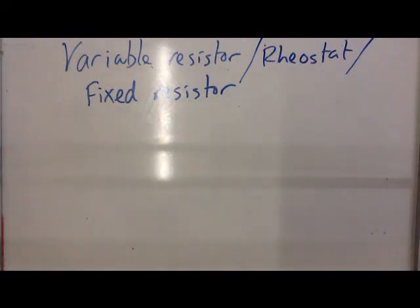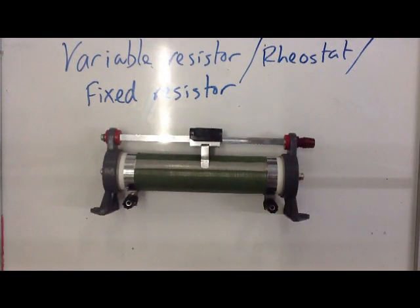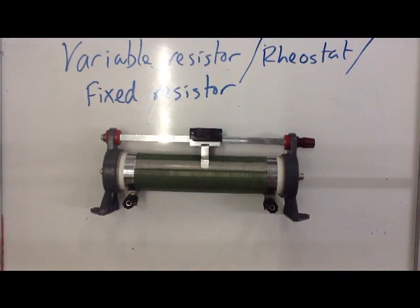Quick video about the variable resistor, this piece of equipment here, which is also known as a rheostat. It can also be known as a fixed resistor as well.